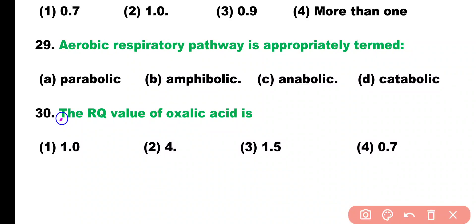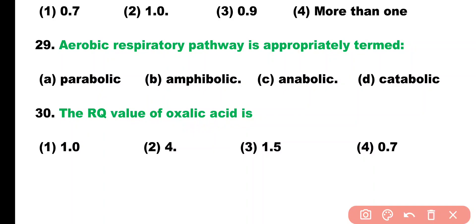Question number 30. Respiratory quotient value of oxalic acid is: 1, 4, 1.5, or 0.7. Correct answer is option 2. The respiratory quotient value of oxalic acid is 4.